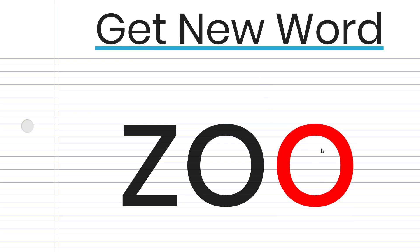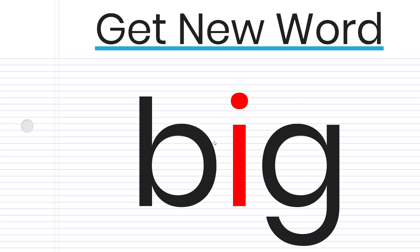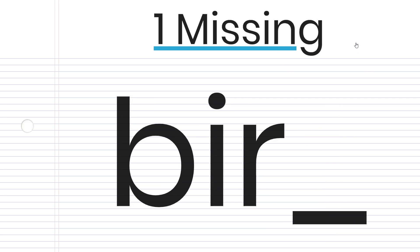Let's check — this word is 'zoo,' and we needed the O. We'll get another one. Let's check — this word is 'big,' and we needed the I.